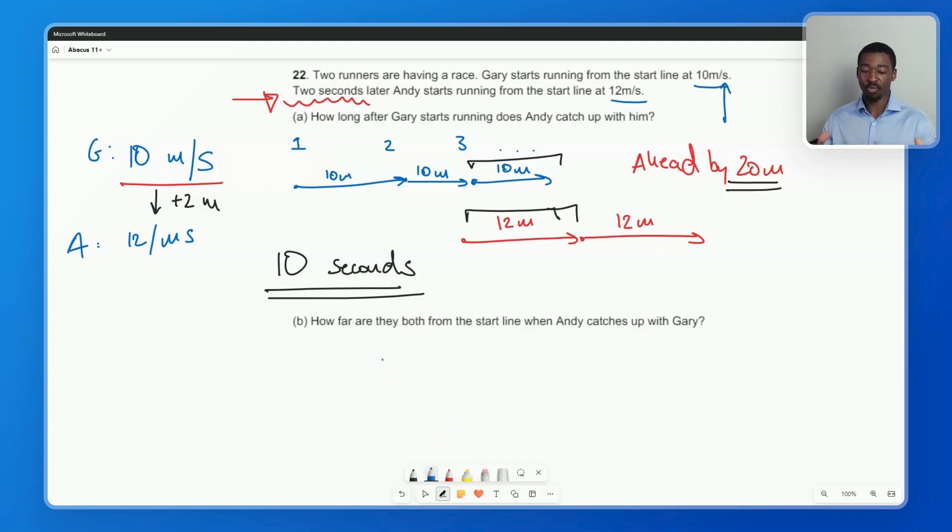So now for part B, this should be pretty simple if we understood everything that was going on in part A. We have to work out how far they both are from the start line when Andy catches up with Gary. Now we know that once Andy starts moving, 10 seconds it takes before he catches up with Gary. We worked that out in part A. So now all we have to do is knowing how long Andy's traveling for and also knowing his speed, which is 12 meters per second, we can work out the distance that Andy covered before he caught up with Gary. And this will be the place where they both meet.